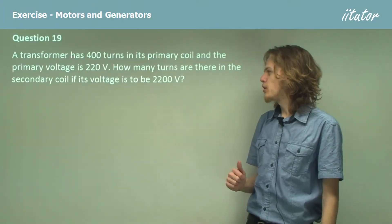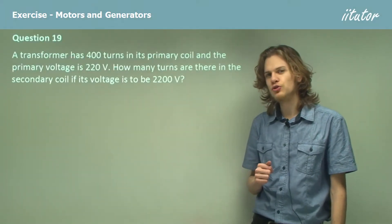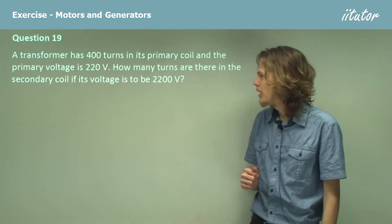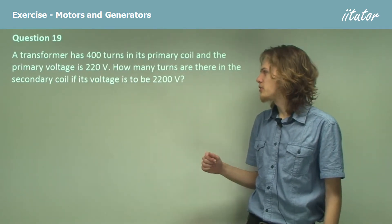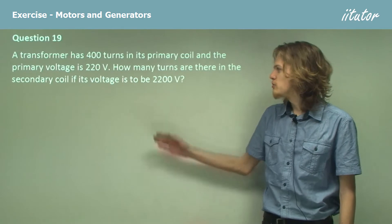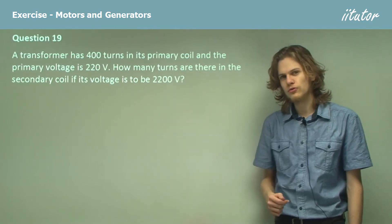A transformer has 400 turns in its primary coil and the primary voltage is 220 volts. How many turns are there in the secondary coil if its voltage is to be 2200 volts?